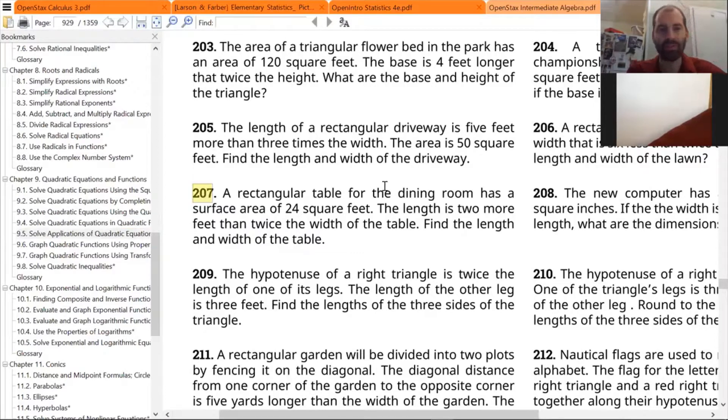So number 207, it says a rectangular table for the dining room has a surface area of 24 square feet. The length is two more feet than twice the width of the table. Find the length and width of the table.